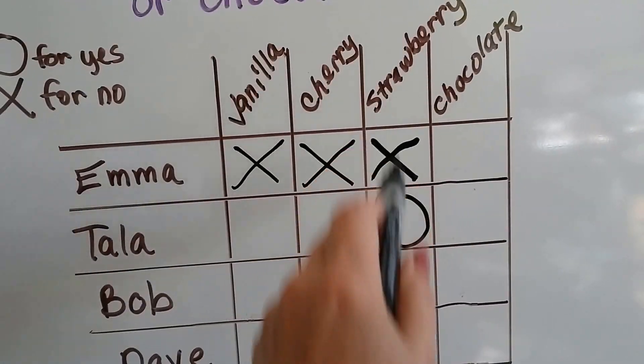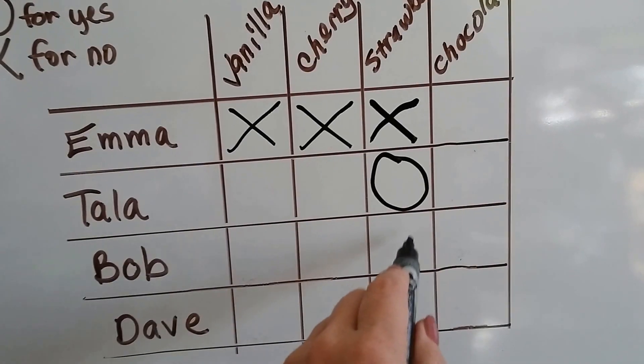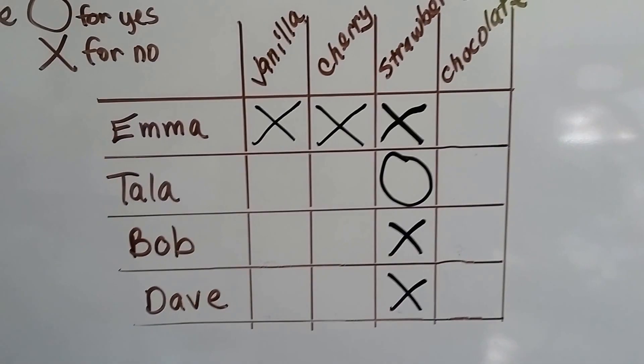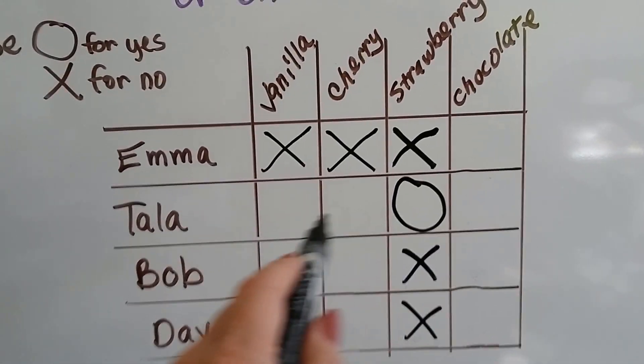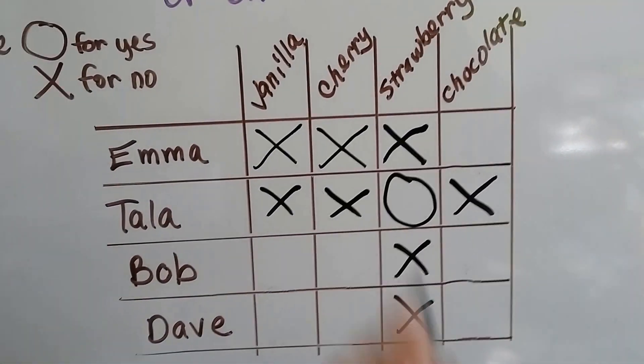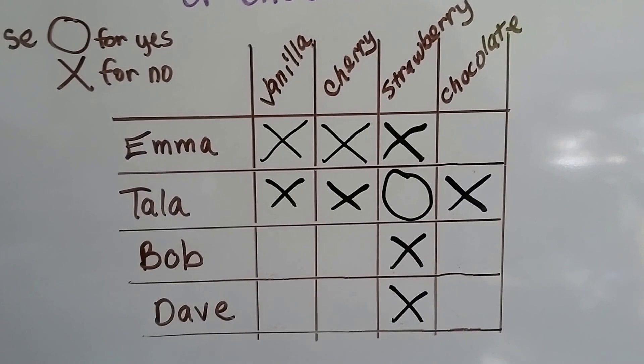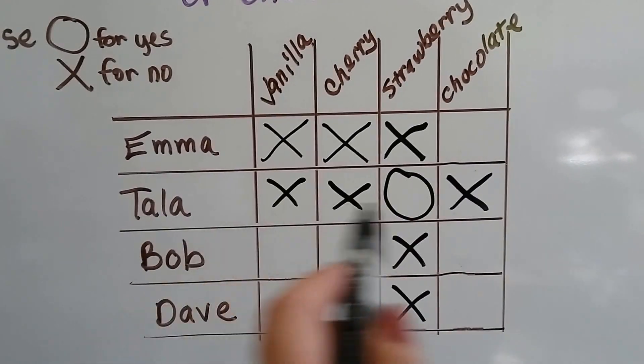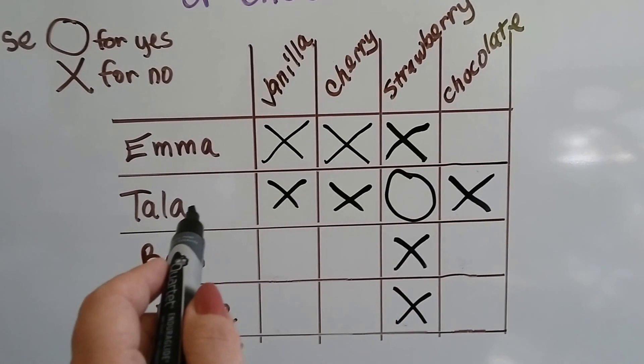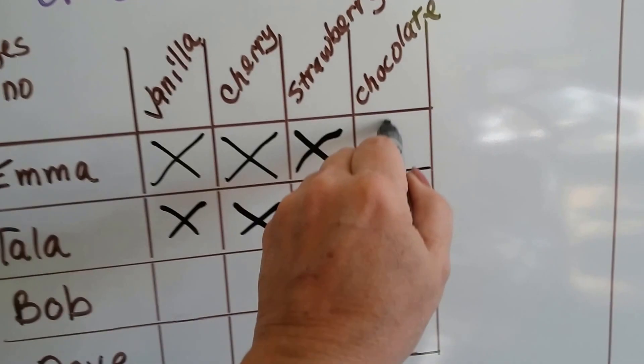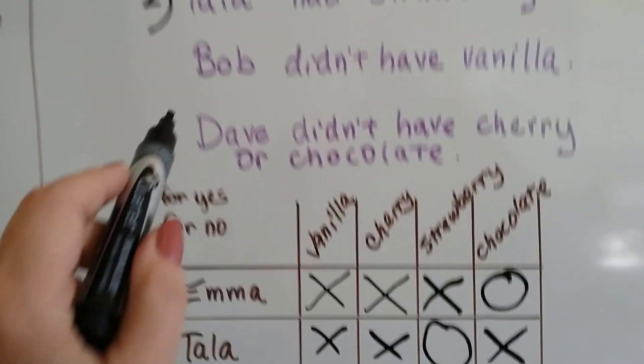And if Tala had strawberry, then it wasn't Bob who had it and it wasn't Dave who had it. And if she had the strawberry, then she didn't have the vanilla, the cherry, or the chocolate. Do you see what's happening? We already know what Emma had. Just by doing the information that was given in the first two clues, we know Emma had to have had chocolate because that's the only one that's left.